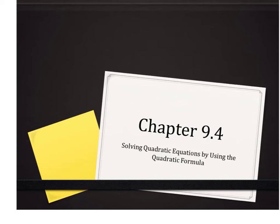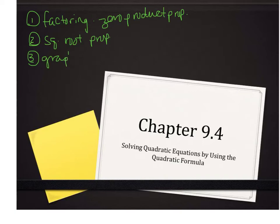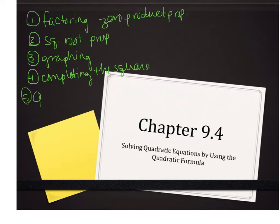Hello and welcome to Algebra 1, Chapter 9.4. Today we're going to discuss solving quadratic equations using the quadratic formula. So you've been keeping track of our ways to solve quadratic equations. Way number one was by factoring, and that used the zero product property. Way number two was the square root property, and those were both from Chapter 8. Number three was solving by graphing, where you're looking for the x-intercepts. Four was completing the square. And five is the quadratic formula.